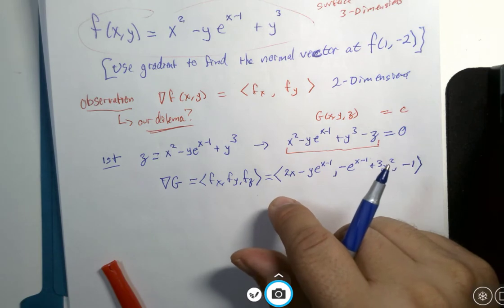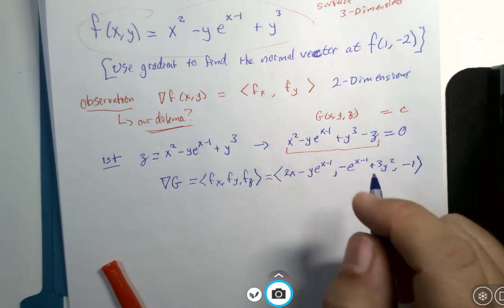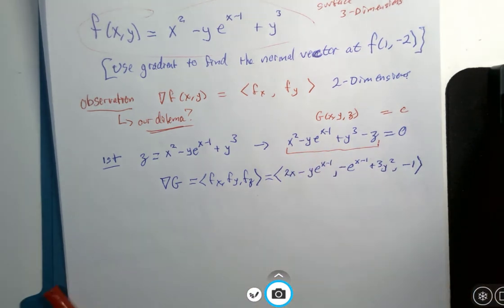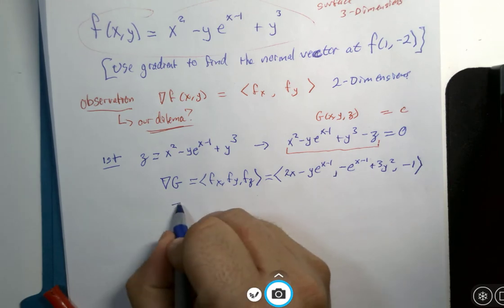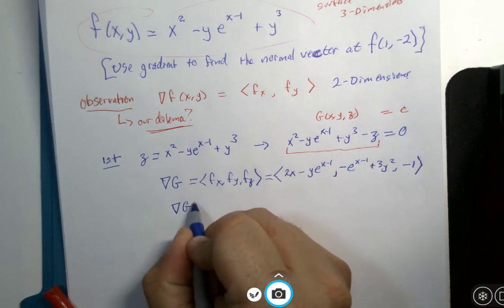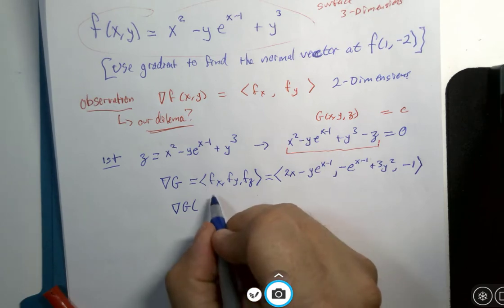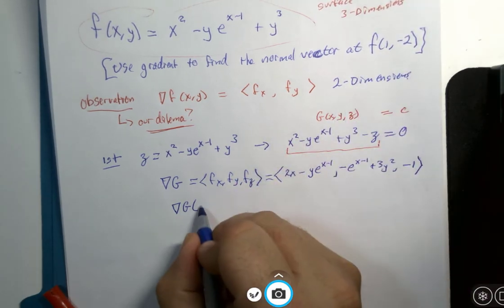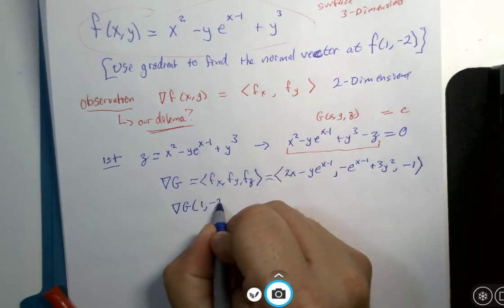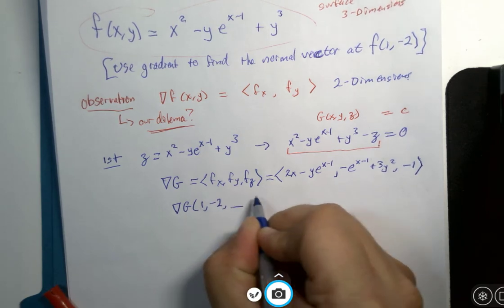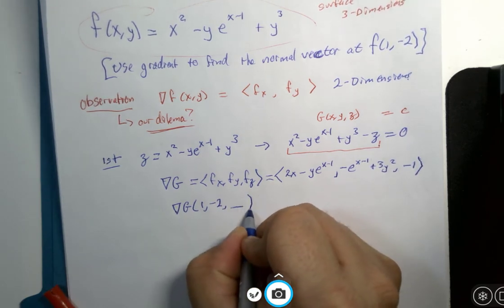Does anyone realize what it is we're missing? We don't have the coordinates, or we don't have all three coordinates. I was given x is 1 and y is negative 2, but I don't have the z coordinate.